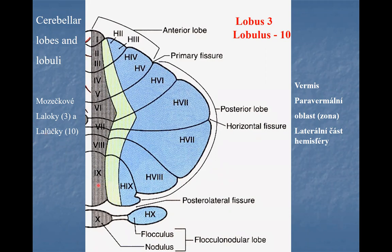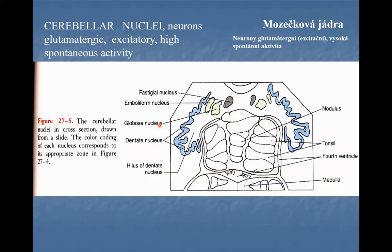In addition to vermis and hemisphere, based on connectivity of the cerebellar cortex, a paravermal area is also delineated. The paravermal area is the medial part of the hemisphere, while the hemisphere is the most lateral part of the cerebellar cortex, and close to the midline is the vermis. Concerning the cerebellar nuclei, there are three on each half: the dentate nucleus, the emboliform nucleus medial to the dentate near the hilum, and the most medial fastigial nucleus.